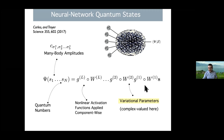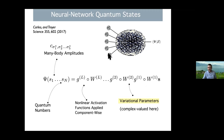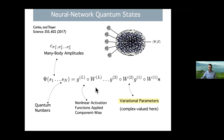A deep network is nothing but a composition of linear and nonlinear transformations, layer by layer. You start from your initial state vector S — a vector of quantum numbers — apply a linear transformation parameterized by some weights W, then apply a nonlinearity component-wise, then another linear transformation, and so on, until you reach the output: a single number, actually in general a complex number, which is also something interesting about applying neural networks to quantum systems. The representation is entirely parameterized by these weights W and the structure of the network.